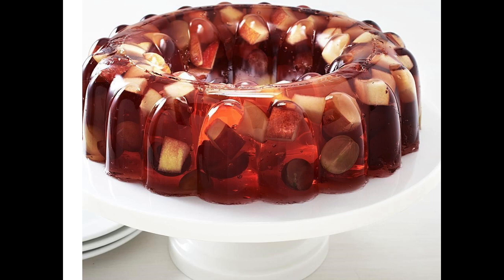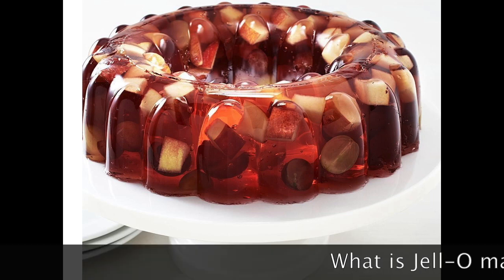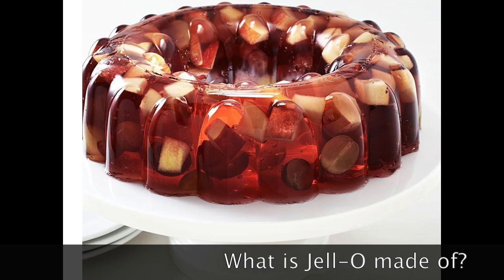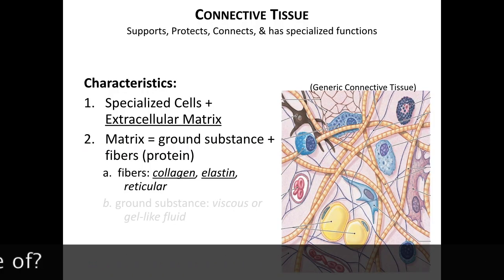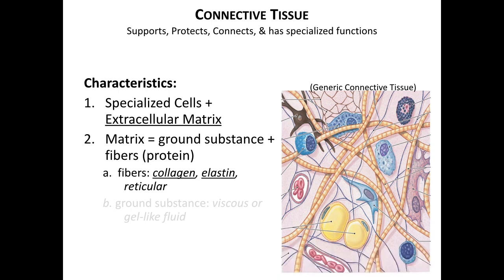So that's the matrix — it's the background you can't see. You could think of it like jello, where all the pieces of fruit are the cells and fibers within it. Another component of the matrix is the protein fibers, which determine the mechanical properties of any particular type of connective tissue. There are two main fibers that show up in almost all the connective tissues, plus another more localized one.